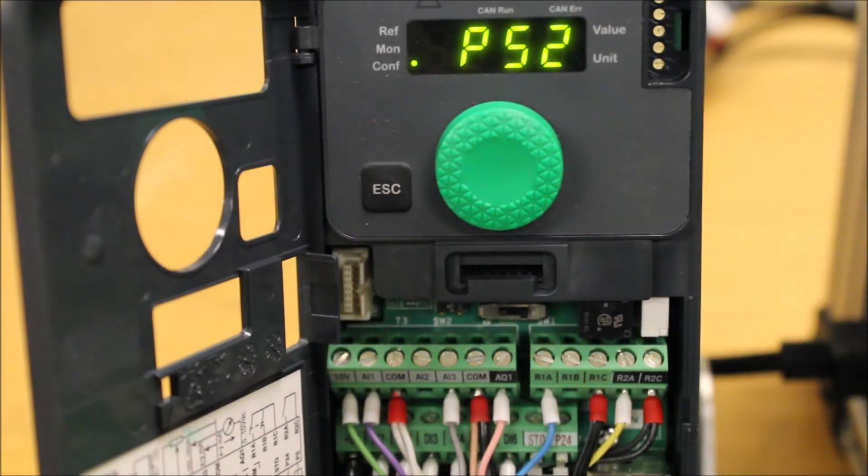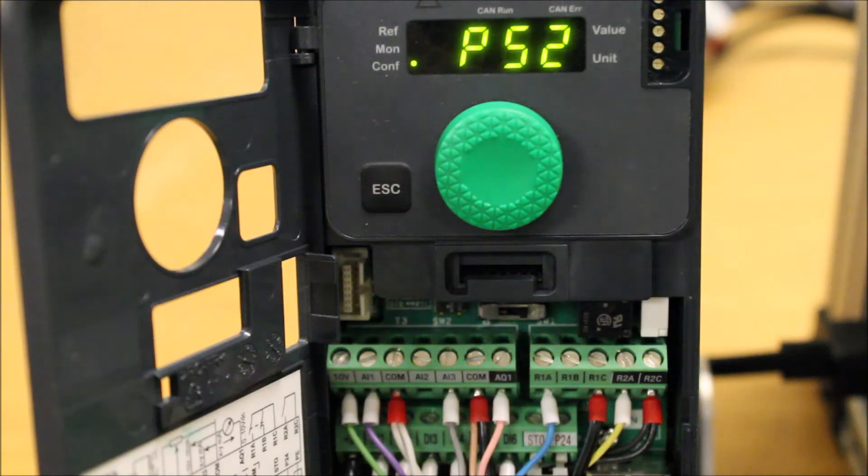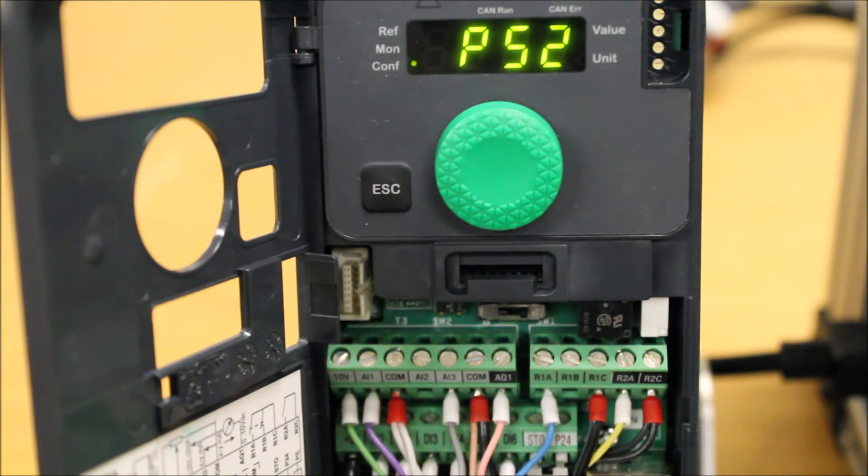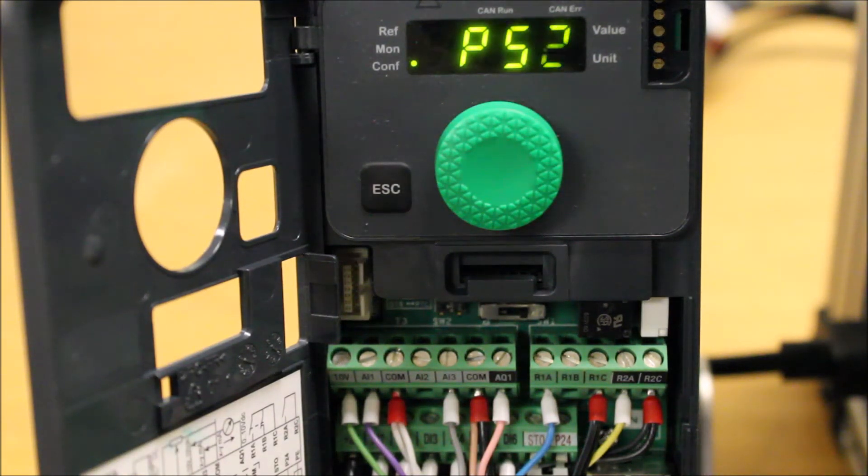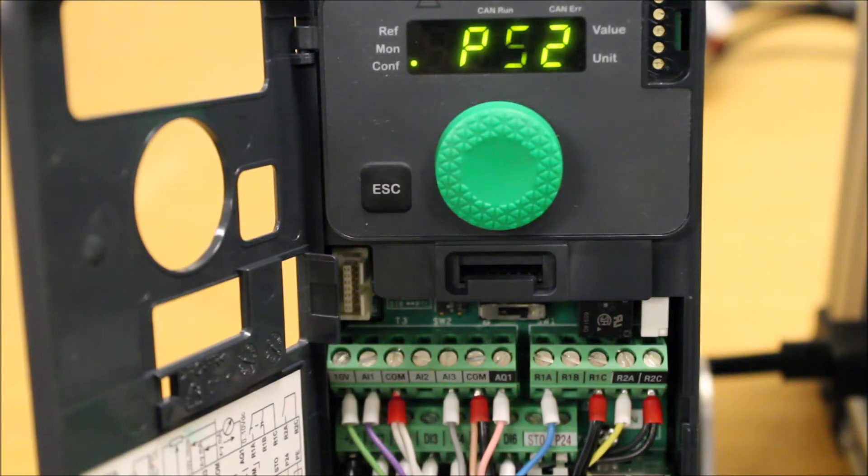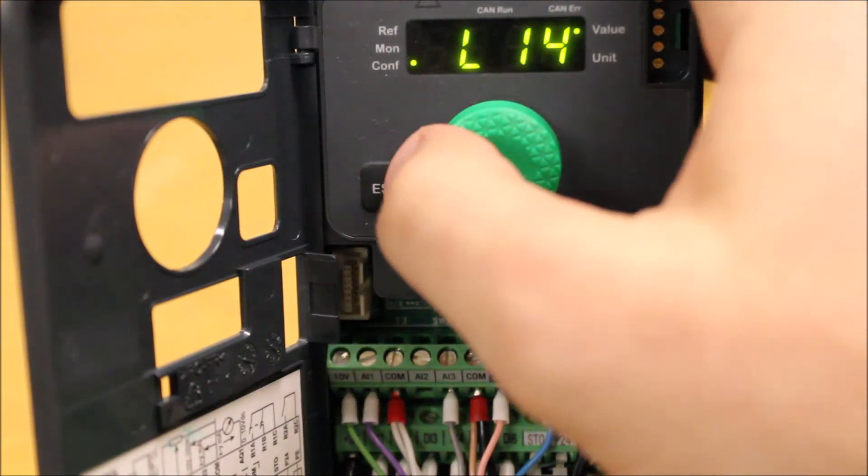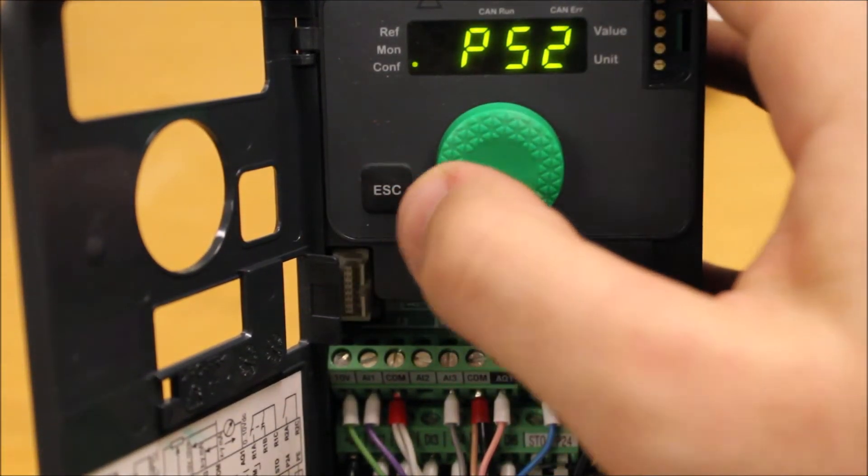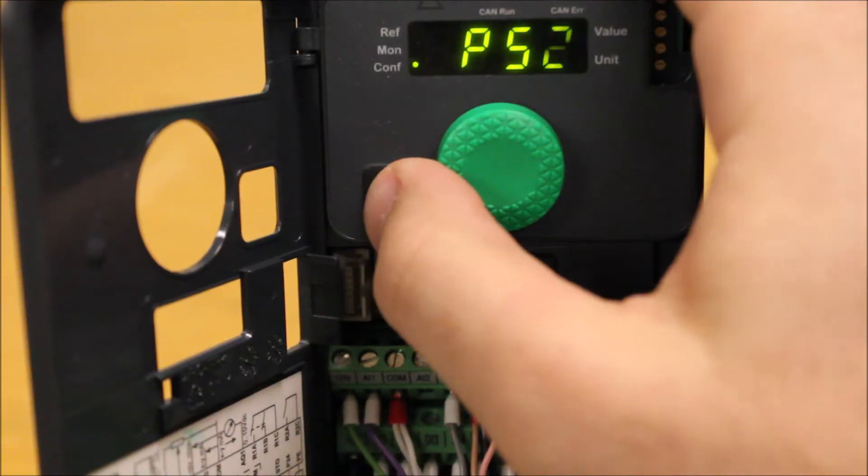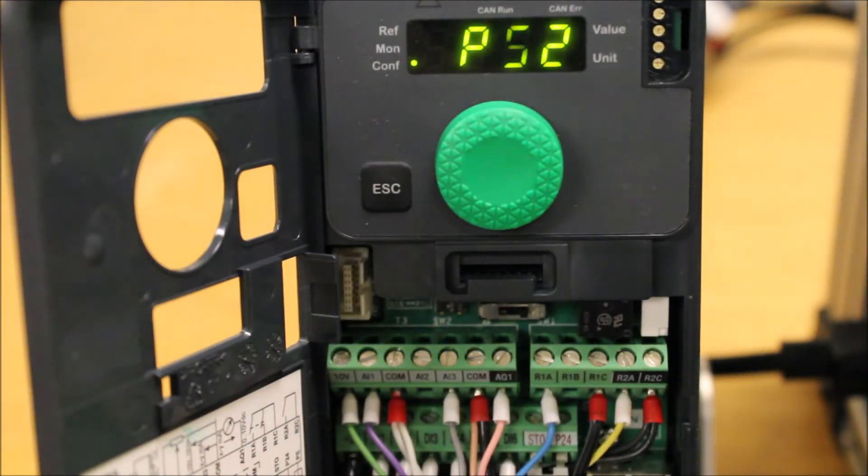What we're going to do is program your first preset as 30 hertz, and the second preset as 60 hertz. And we're going to go one step further and say, if we have both LI3 and LI4 programmed or assigned and turned on, then we're going to go to 45 hertz, just to give you another example.